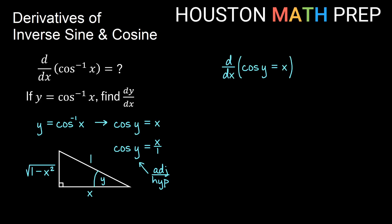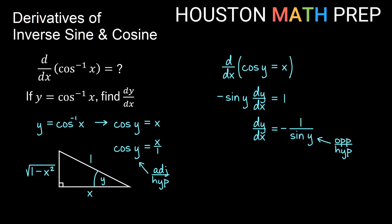We take the derivative with respect to x of cosine y equals x using implicit differentiation again. The derivative of cosine y is negative sine y, and by the chain rule we multiply by dy/dx, which equals 1. Dividing, we get dy/dx equals negative 1 over sine y. Going back to our right triangle, sine y is opposite over hypotenuse — the opposite being the square root of 1 minus x squared and the hypotenuse being 1 — giving us dy/dx equals negative 1 over the square root of 1 minus x squared.